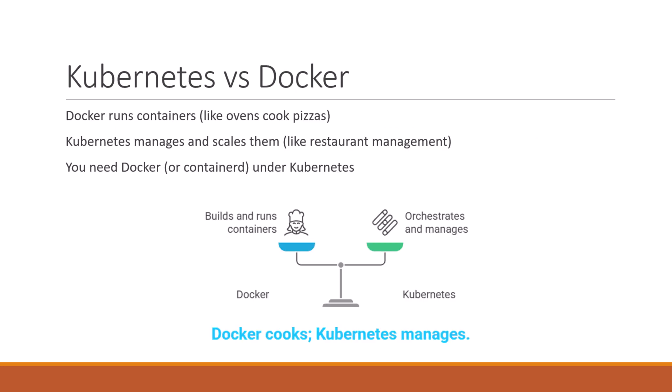Kubernetes versus Docker: what's the deal between the two? Docker is like the oven — it cooks the pizza, meaning it runs the application. Kubernetes is like the restaurant manager — it decides how many ovens, how many chefs, and who should work where. Docker or containerd still runs the app; Kubernetes just makes them all work together when you have many.